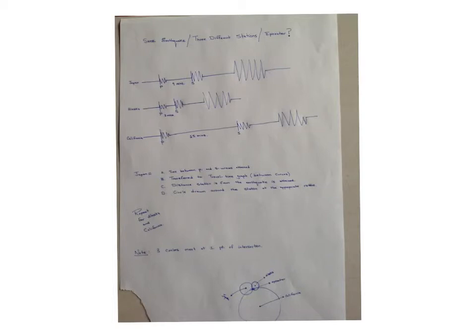So as you can see with Japan, there's nine seconds between the arrival of the first P wave and first S wave. For Alaska, there's three minutes between the arrival of the first P wave and the first S wave, and for California, there's 25 minutes between the arrival of the first P wave and the first S wave. So just based on that alone, I can tell that Alaska is closest to the earthquake, and I can tell that California is the furthest from the earthquake.